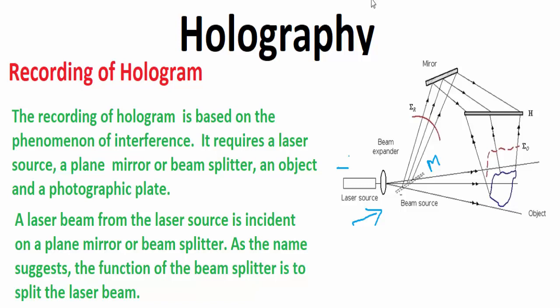After that, the superposition of these two beams, both this one and this one, on the photographic plate produces an interference pattern, which is recorded on this plate. The photographic plate carries this interference pattern.